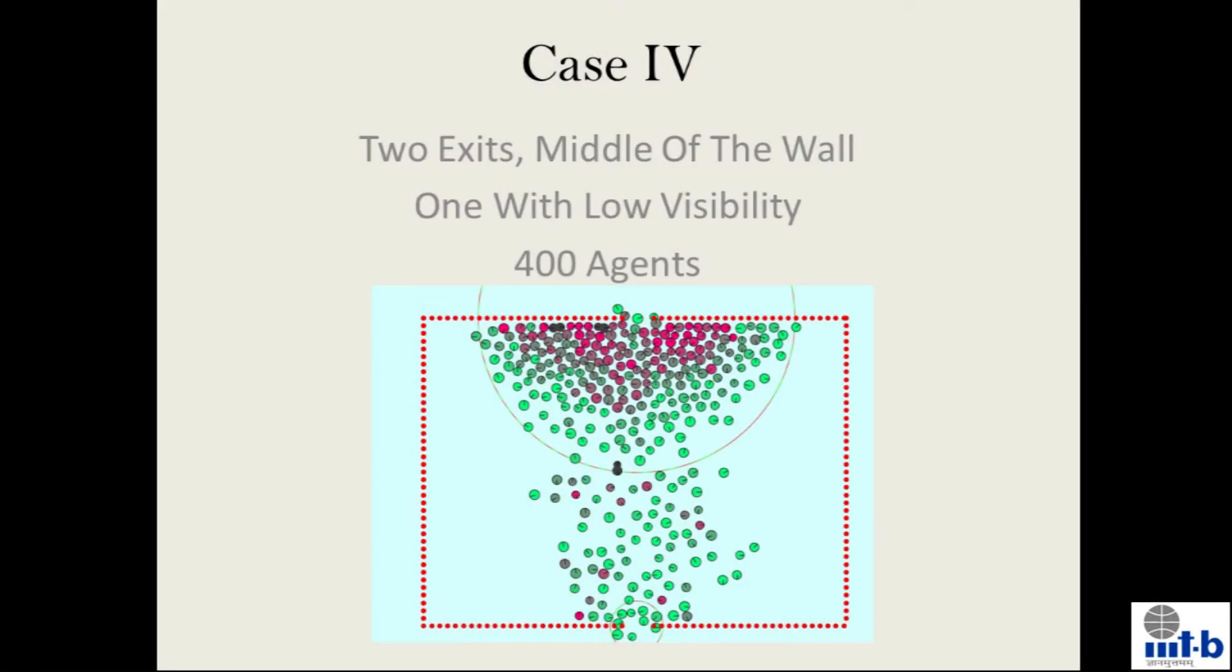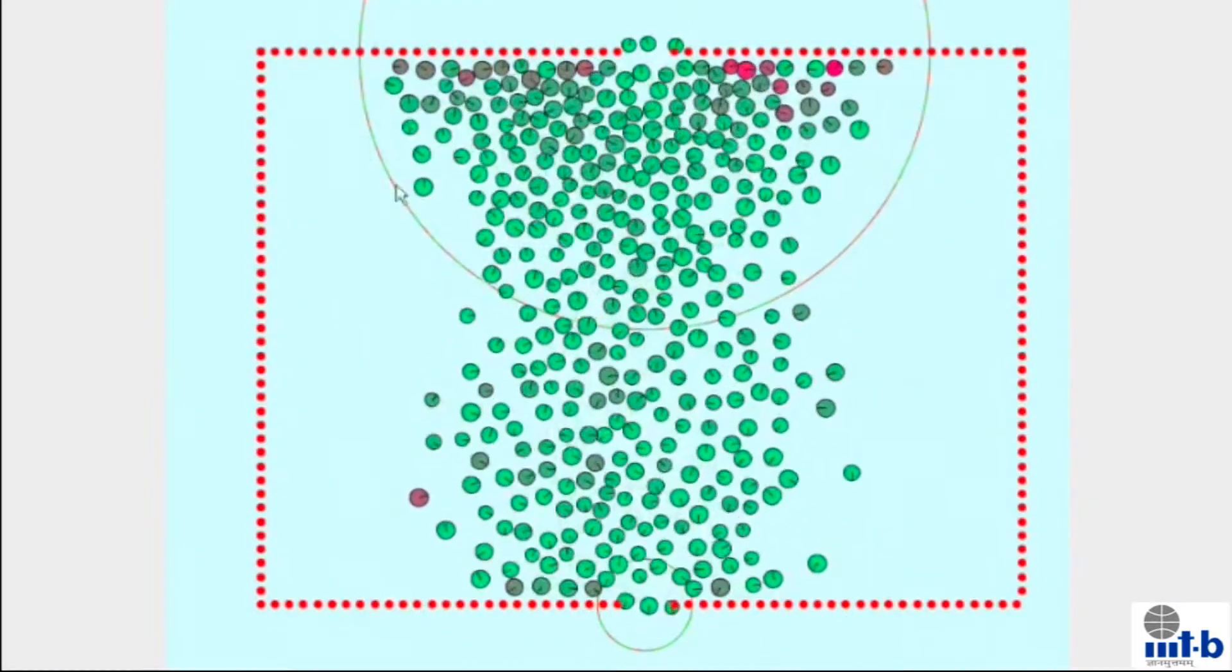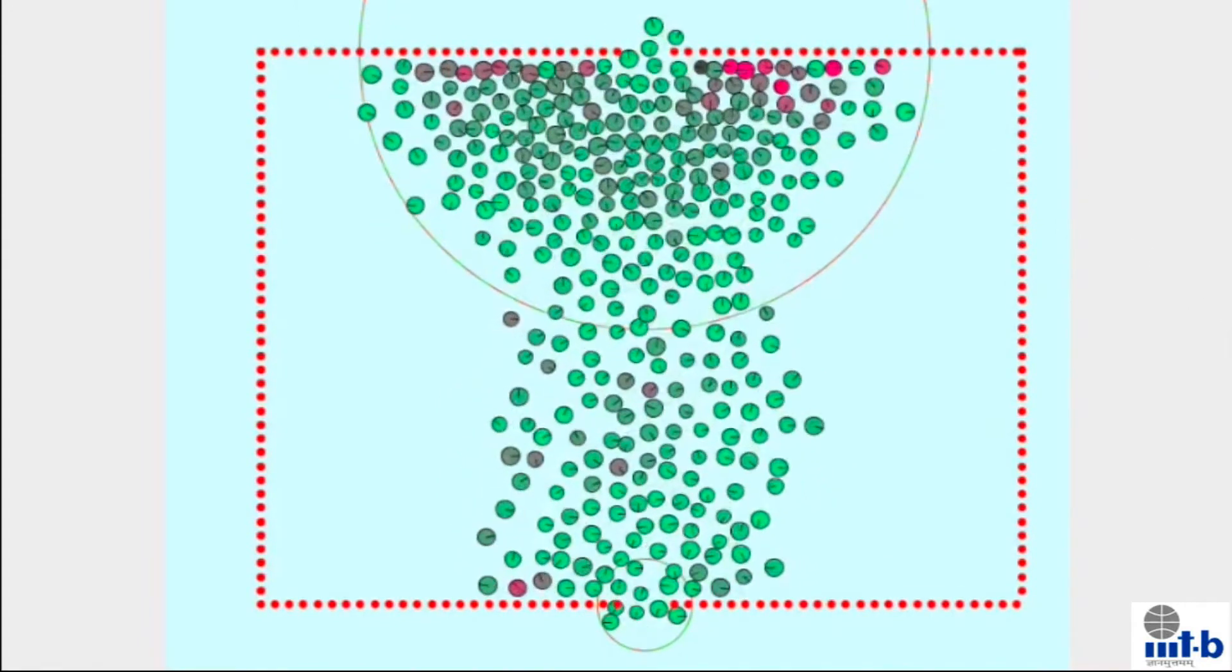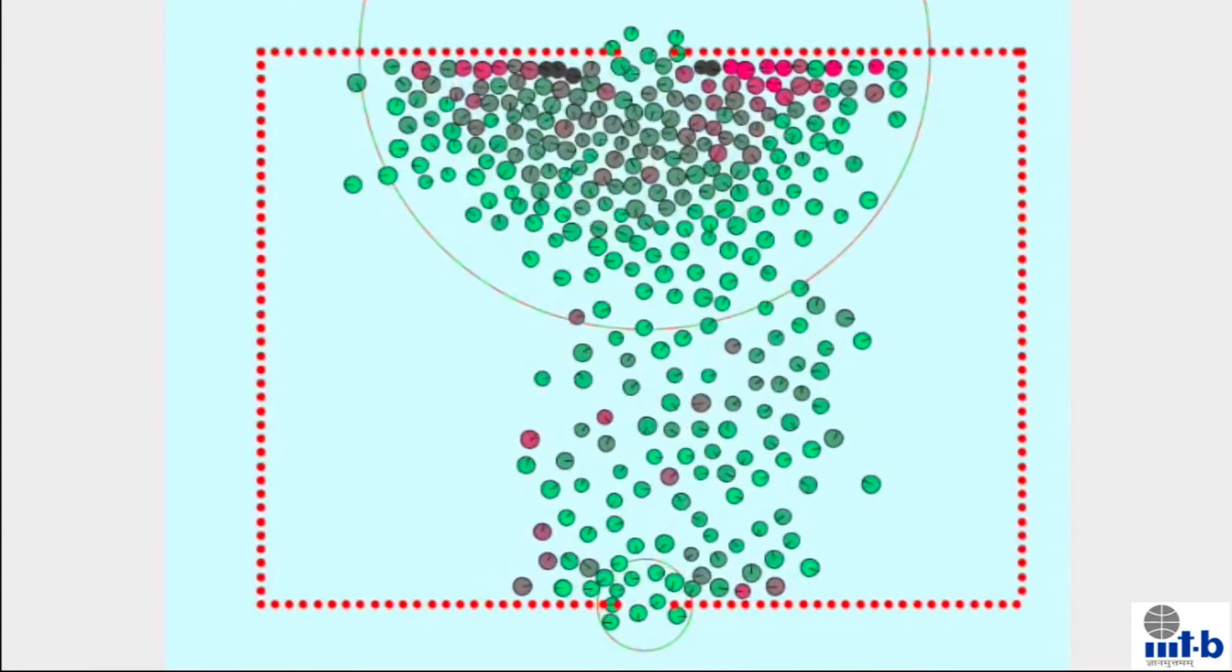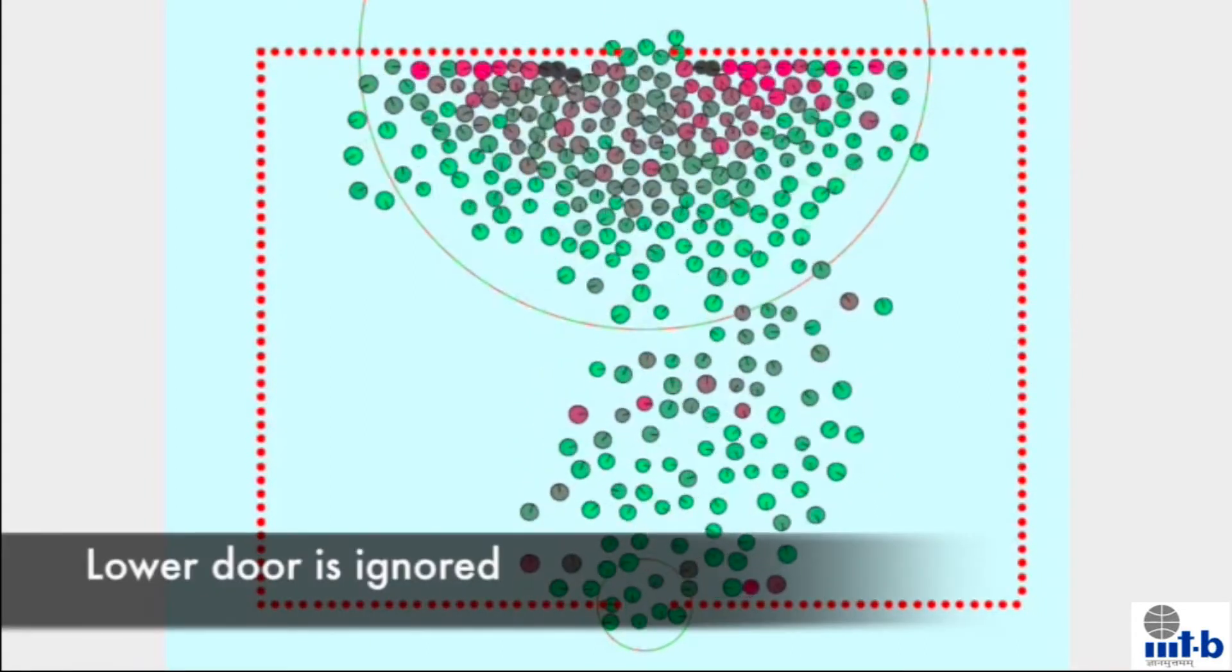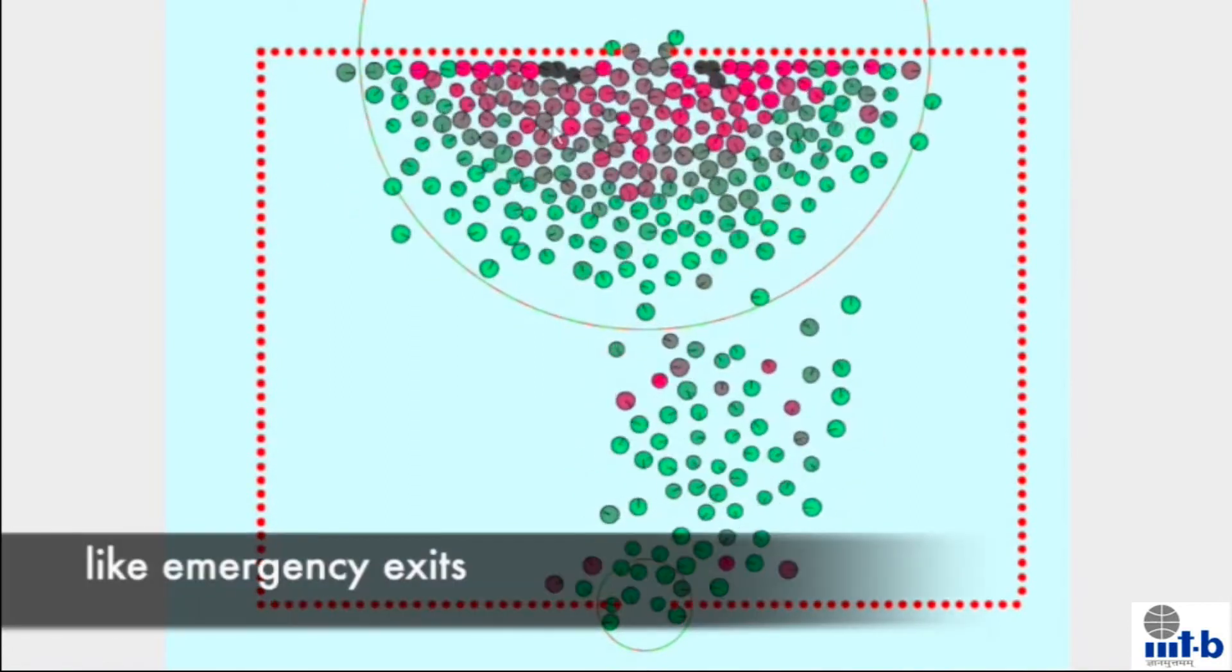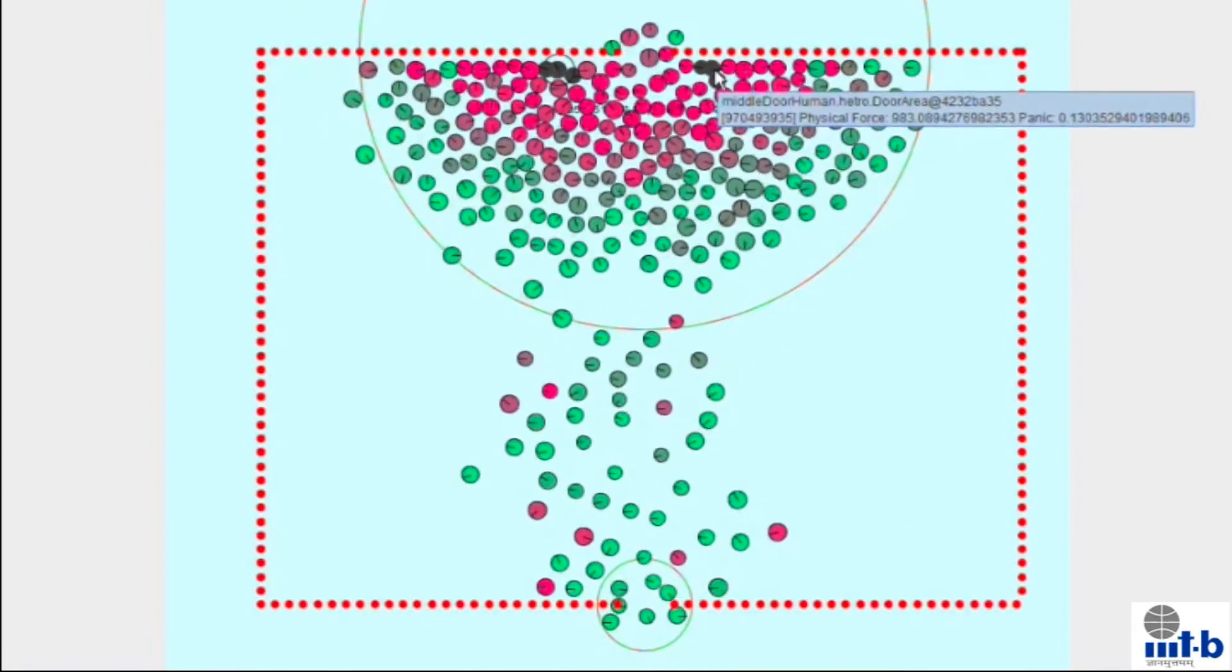Case 4 has two exit doors in the middle of the room but one is with low visibility. This scenario occurs when one of the door is less known to the crowd, like emergency exits. The crowd tends to ignore the emergency doors and show herding behavior towards the one door which is more known to the crowd. We found that the evacuation time is not much less than the case which has only one door. So, it is very important to educate crowd about the emergency exits.